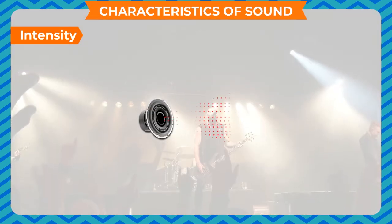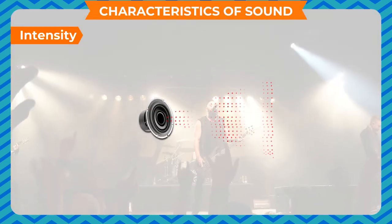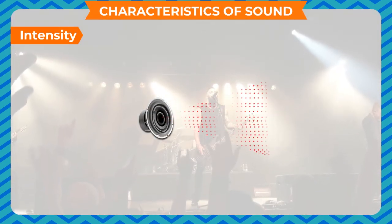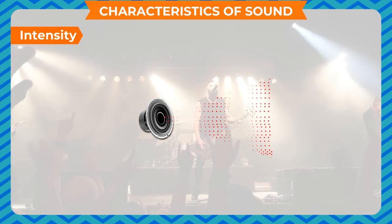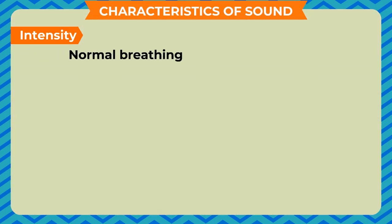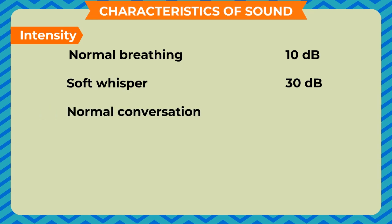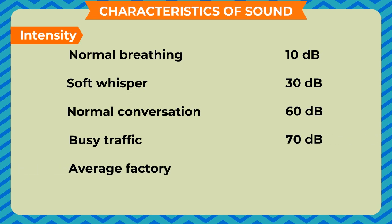The following gives some idea of the loudness of sound from various sources: normal breathing — 10 decibels; soft whisper — 30 decibels; normal conversation — 60 decibels; busy traffic — 70 decibels; average factory — 80 decibels. Above 80 decibels, noise becomes physically painful.